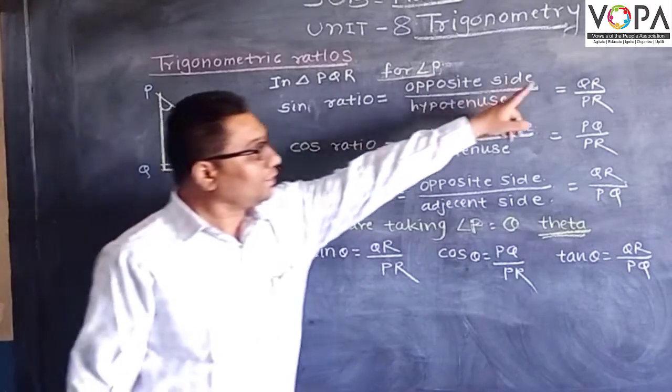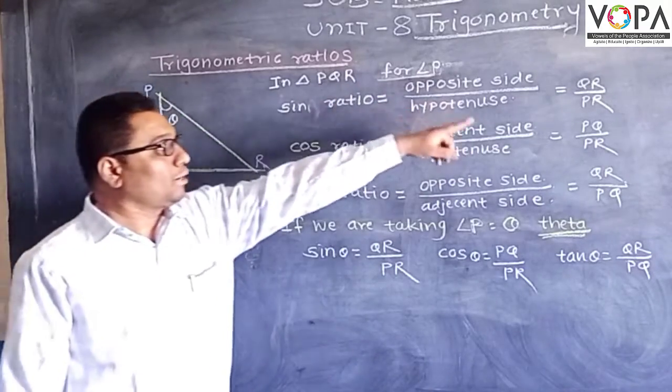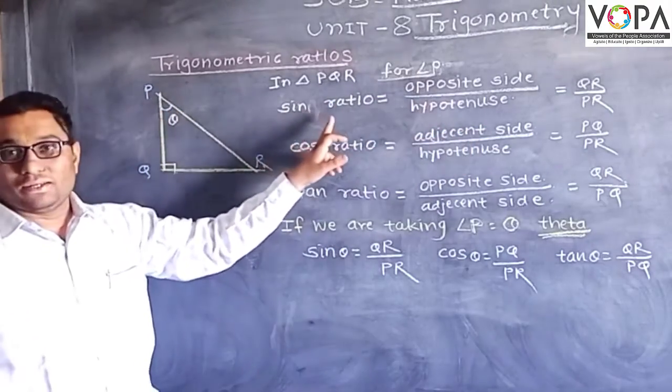The opposite side QR over the hypotenuse PR - that is, QR upon PR - is the sine ratio.